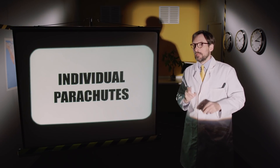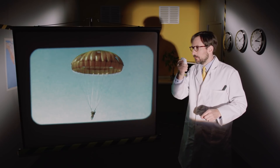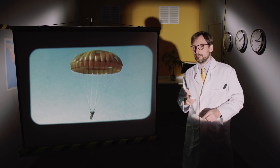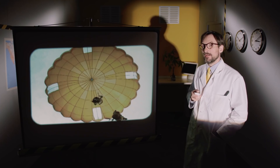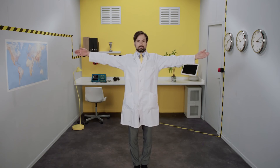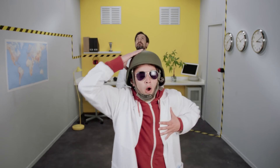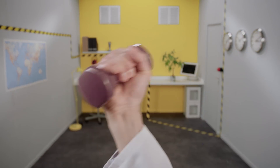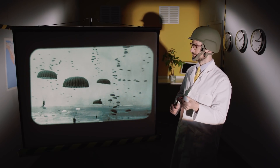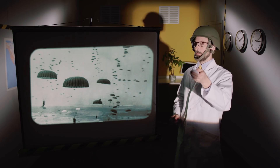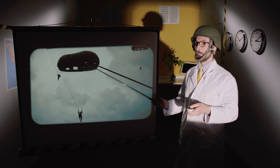So-called individual parachutes are divided into two categories. On one side, those with a round canopy, designed for mass jumps by airborne troops. Their wide amplitude allows soldiers to be dropped at low altitude, with a load of 180 kilos. These parachutes made history when they were used by American paratroopers during the Normandy landings in 1944.